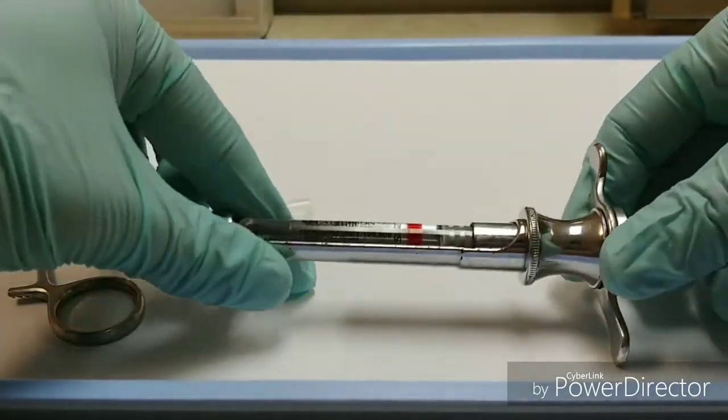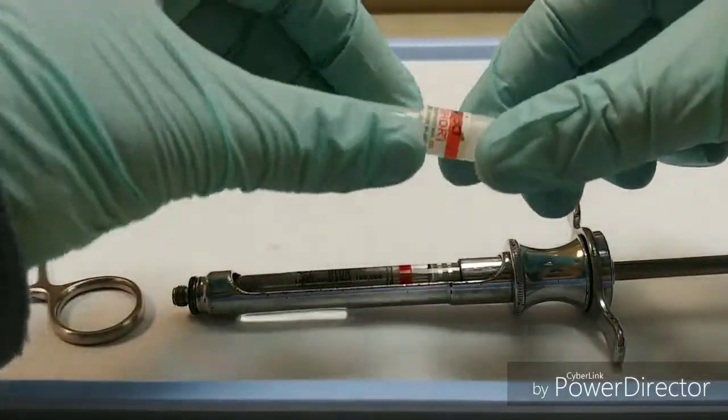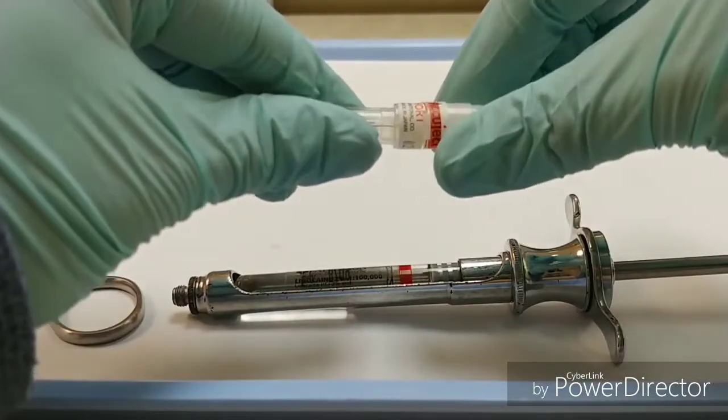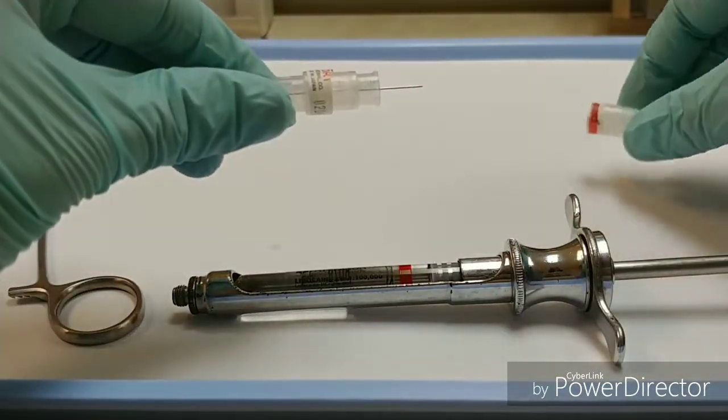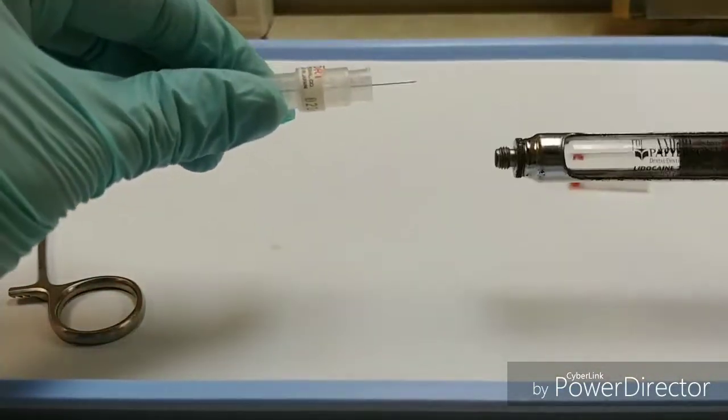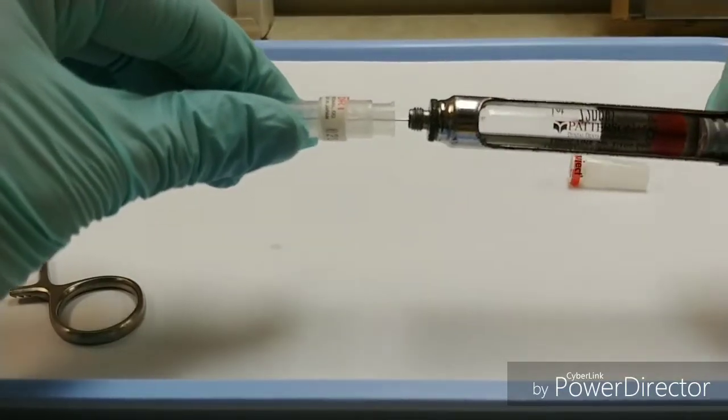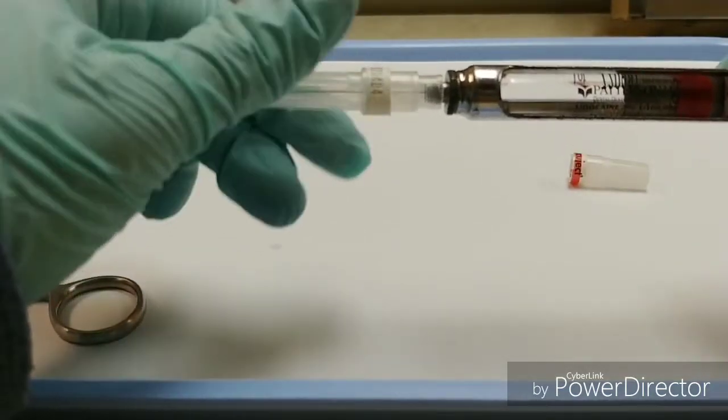Next, I'm going to attach the needle, so I will uncap my cartridge penetrating end of my needle, and then I can attach it to the needle adapter of the syringe, like so, just screws on.